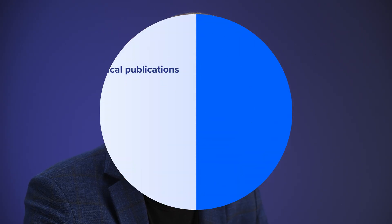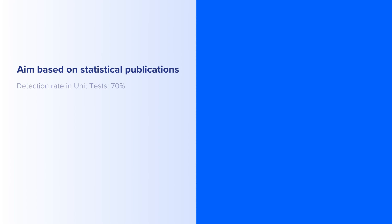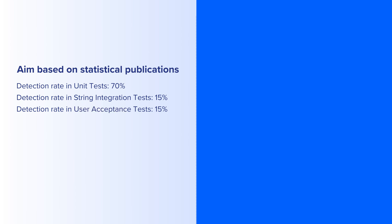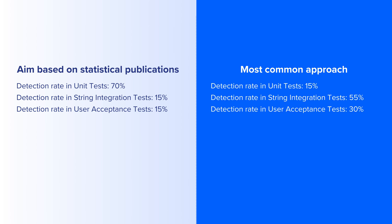First, we would have to look at the defect resolution rate before implementation of the shift-left concept and put it against the detection rate post its implementation. Relying on statistical publications, we should be aiming for something like 70% detection rate in unit testing, 50% during string integration tests, and 50% during user acceptance tests with shift left in place. On the contrary, the most common approach gives 15%, 55%, and 30% respectively.